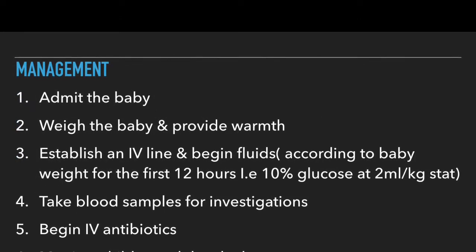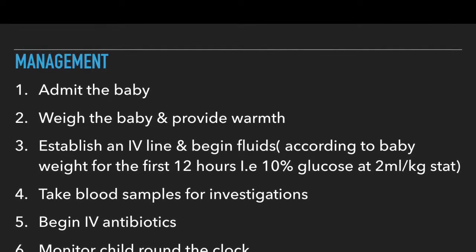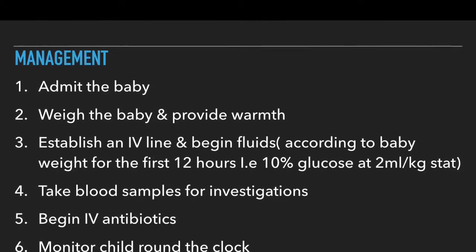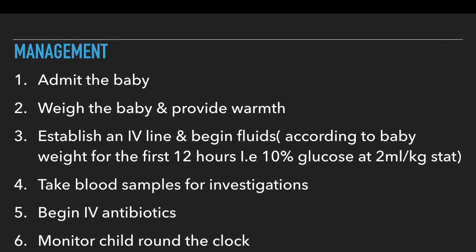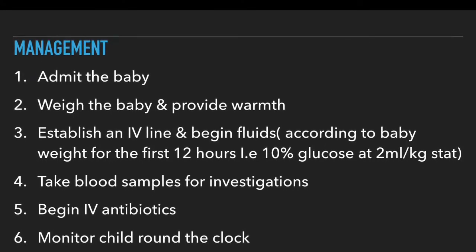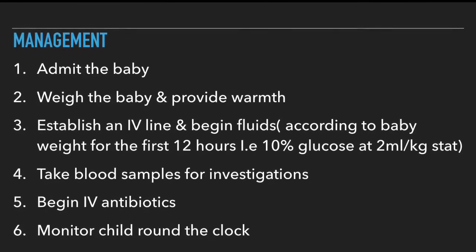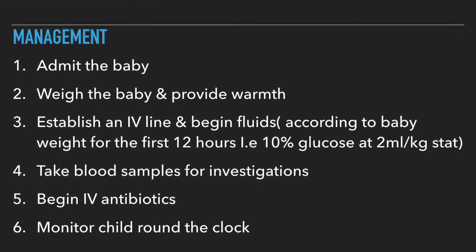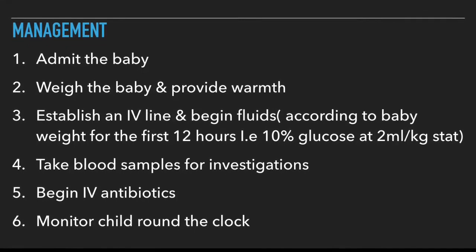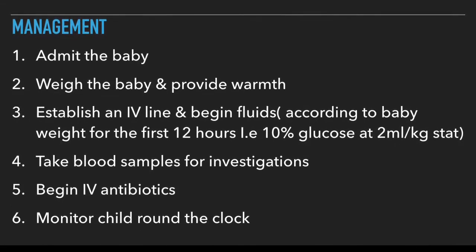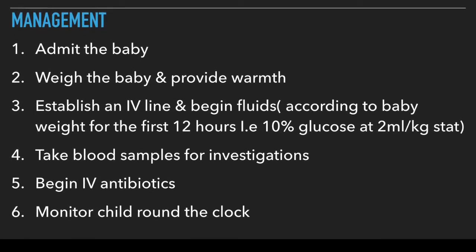For general management of a neonatal sepsis baby: number one, admit the baby; two, provide warmth and weigh the baby; step three, establish an IV line and begin resuscitation fluids given according to the weight of the baby — for example, 10% glucose at 2 mls per kilogram IV. After that, collect blood for investigation, including the septic screen and sensitivity tests.